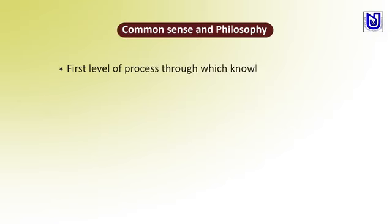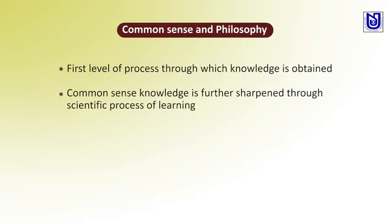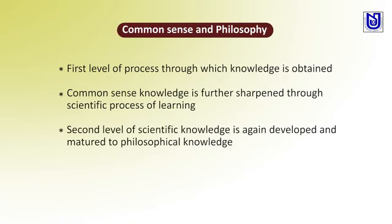The subject philosophy can be better understood if it is compared with common sense. Common sense is the first level of process through which knowledge is first established and first acquired. This common sense is turned to higher knowledge, which is further developed through a scientific process of learning. So: first common sense, then developed knowledge, then more developed knowledge turned into a scientific process of learning. Then this second level of scientific knowledge is again matured and turned into philosophical knowledge.